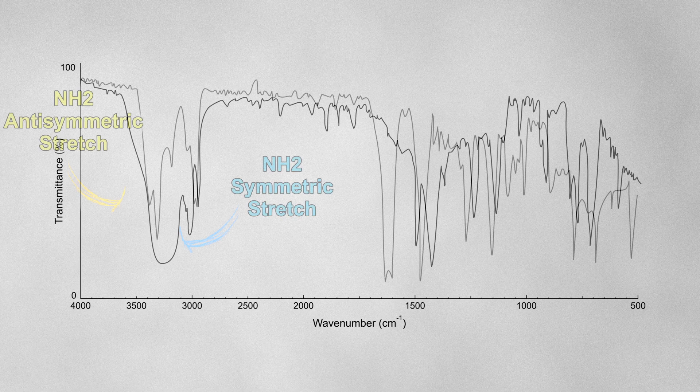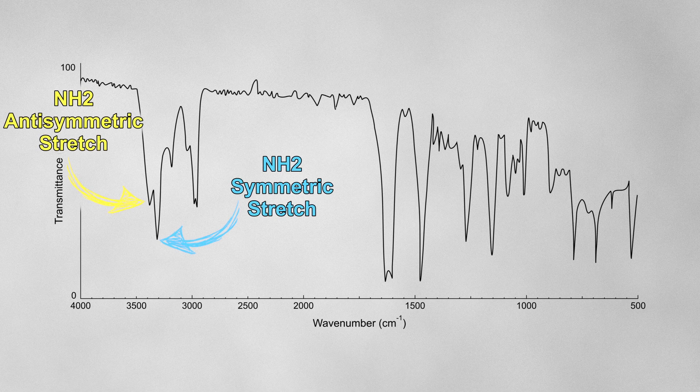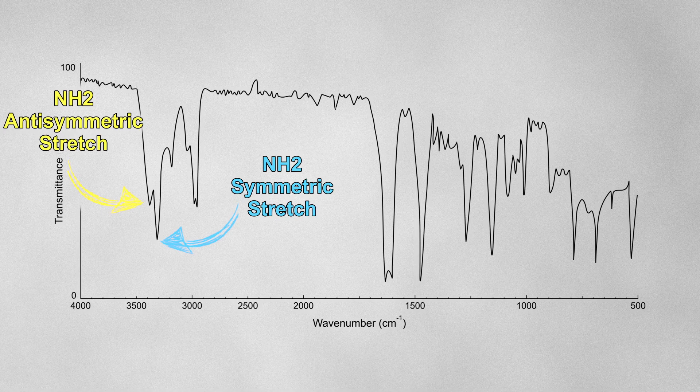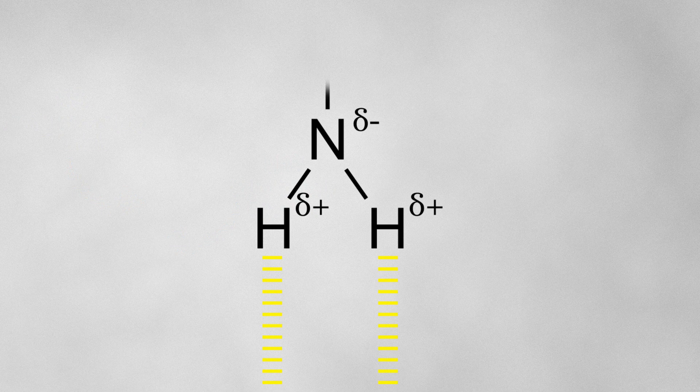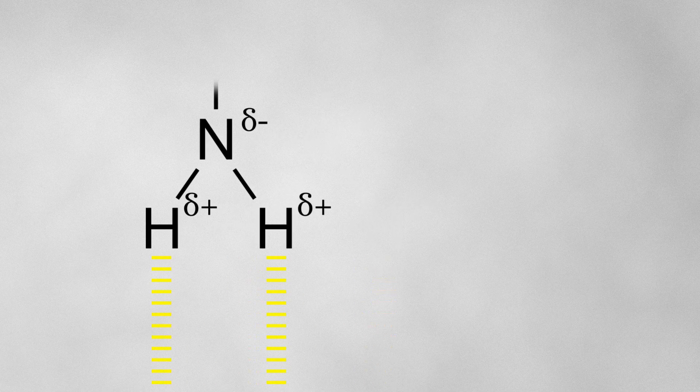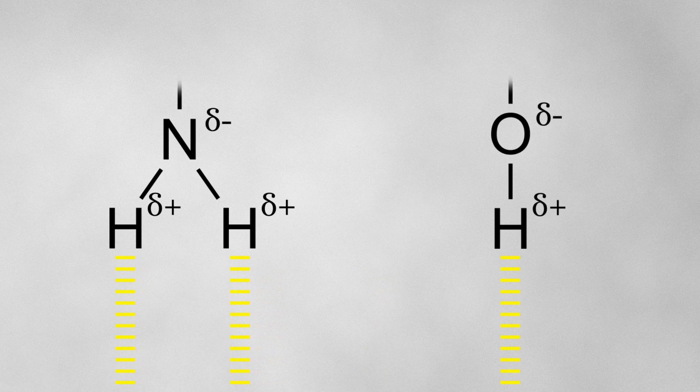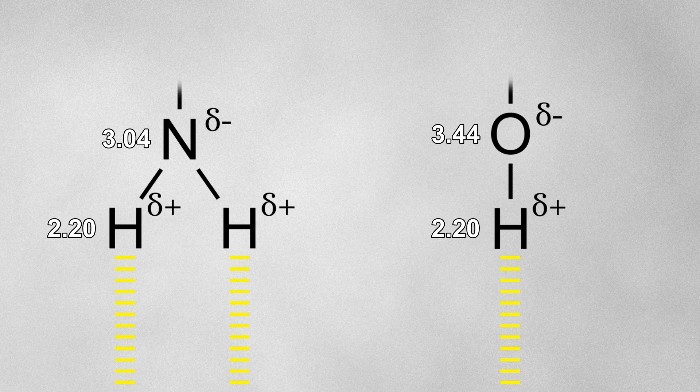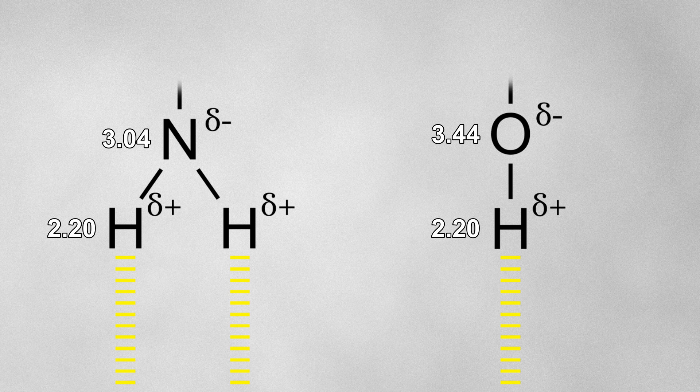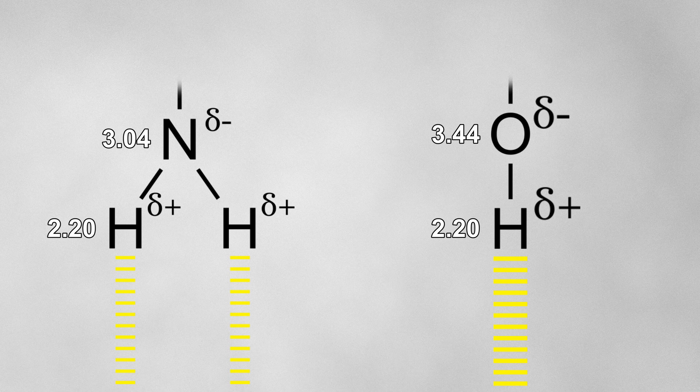You may be wondering why NH bonds aren't broad, even though they exhibit hydrogen bonding as well. The reason for this is that the hydrogen bonding that stems from NH bonds is weaker compared to the hydrogen bonding that stems from OH bonds. This can be explained by the electronegativities of nitrogen and oxygen. Oxygen and hydrogen have a much larger difference in their electronegativities, so the OH bond is a lot more polar, leading to stronger hydrogen bonding, which gives rise to broader absorption bands in the IR spectrum.